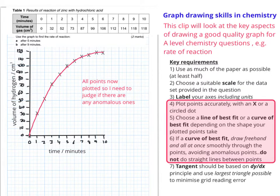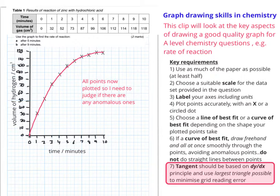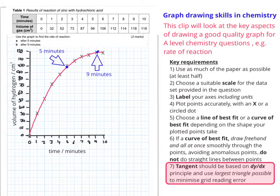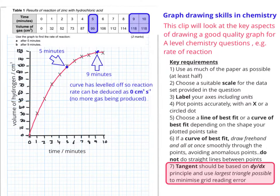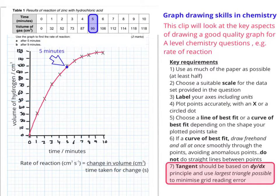Now I'm going to move down to the tangent part. The question wants me to find the rate of reaction after five minutes and after nine minutes. What I'm going to do is find the point at which five minutes exists on the line and the point at which nine minutes exists on the line. At five minutes you have a point where the curve still has some slope in it. At nine minutes you can see the curve is flattening off.